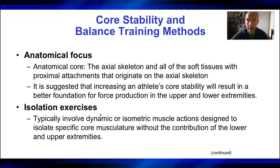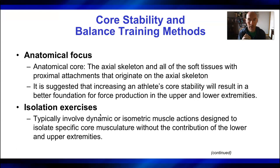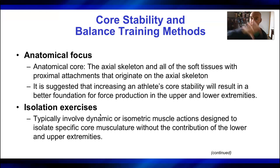An isolation exercise, on the other hand, is one that uses a single joint. The bicep curl is the best example — only the elbow joint is in motion. Even if you do both elbows, it's still referring to one type of joint in action. Only a single joint is in motion, so that's an isolation exercise. Less muscle mass is recruited versus a multi-joint exercise.